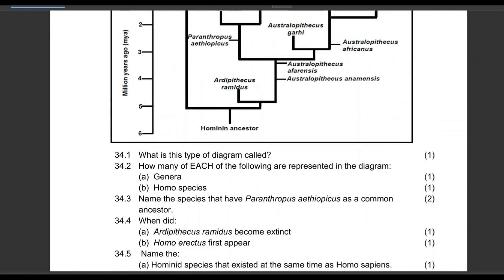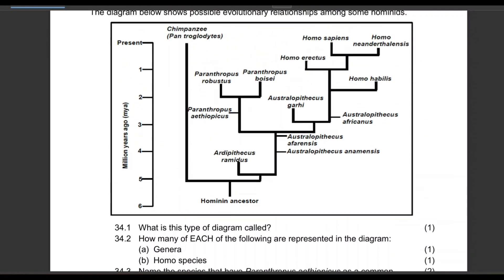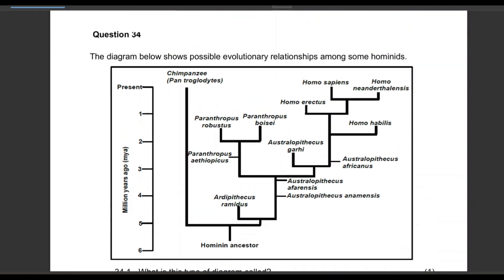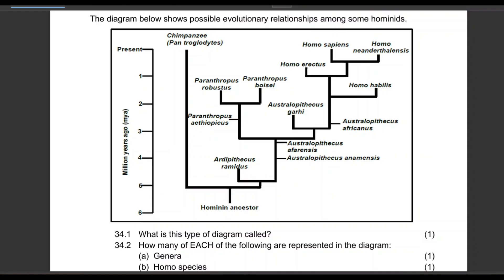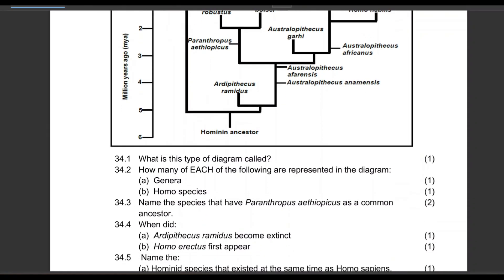Now we move to a phylogenetic tree question. You obviously need to read, understand, and analyze it — it's not difficult. The first question asks: what is this type of diagram called? This is a phylogenetic tree, also called a cladogram.